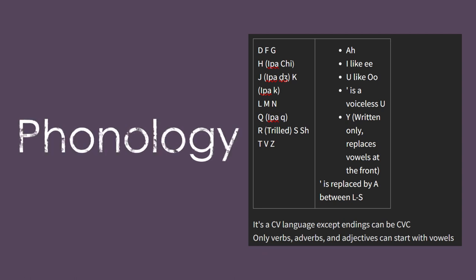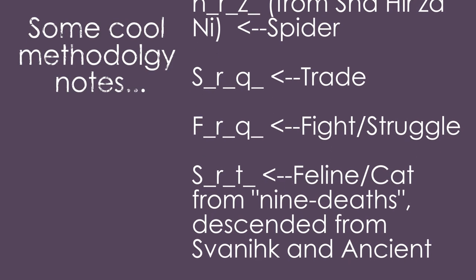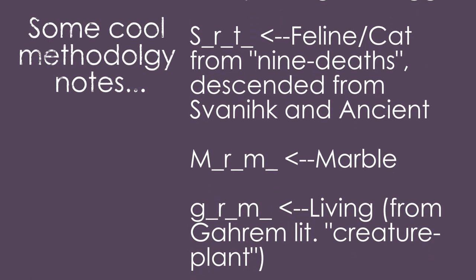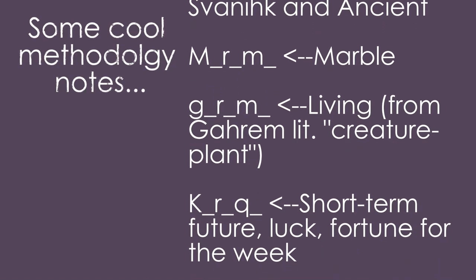Shahirzani is a CV language, except the ending is going to be CVC, and only verbs, adjectives, and adverbs can start with vowels. One of the really neat things about making this language was I took the consonant structures from my proto-language and removed the vowels, and then I created vowel structures that would go into it. I understand that this isn't exactly how consonantal root systems evolve in real life, but I'm only here to emulate real life for people who don't know a lot about languages. So with that in mind, I'll go over my vowel stems really quickly.